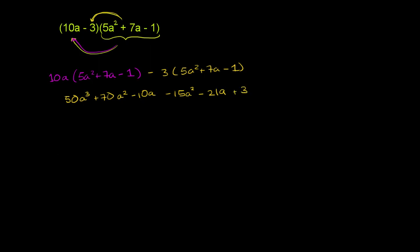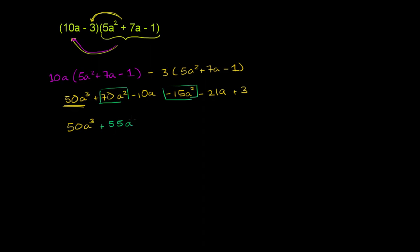Now we can merge like terms. This is the only a to the third term, so this is 50a to the third. Now we have two a squared terms: 70a squared and negative 15a squared. 70 of something minus 15 of that something is going to be 55 of that something, so plus 55a squared.